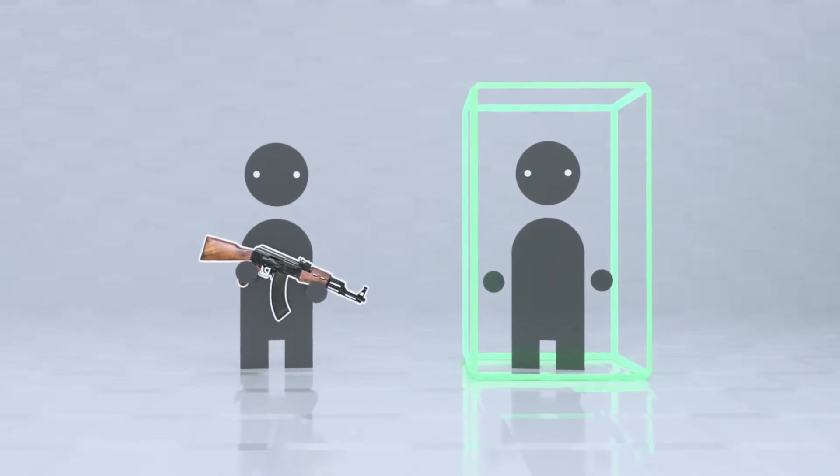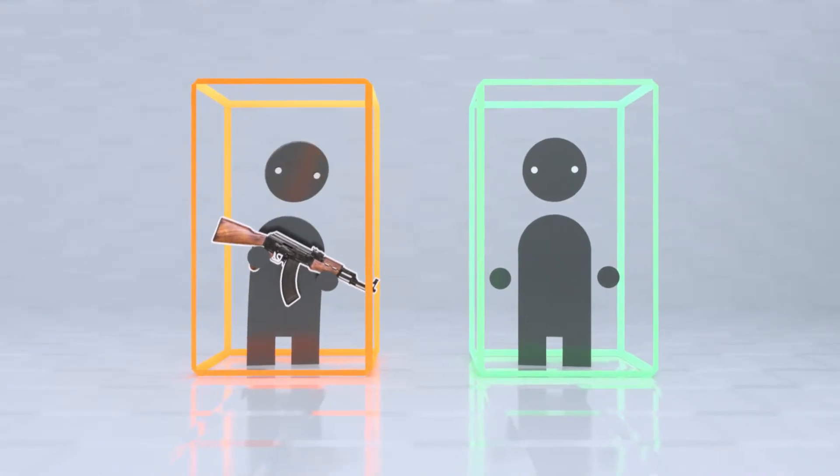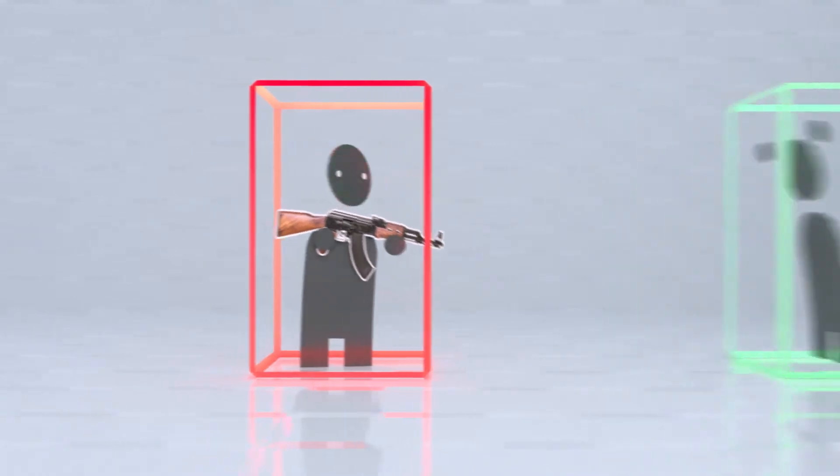People holding a weapon get an orange box. These drones attack red boxes, so if you're holding a gun and you target a green box, your label changes to red, triggering the drone.